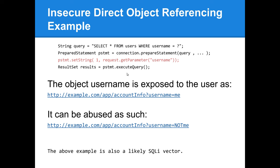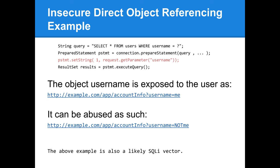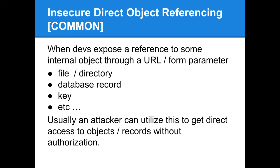Whenever an object is insecurely referenced and exposed to the user, and it is an object stored in the database backend, those cases are likely also SQL injection vulnerability vectors. Objects include files on the file system, database records that shouldn't be exposed, keys, other people's posts and messages, other people's account information, and so on.